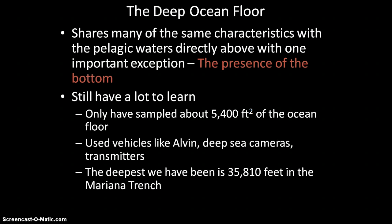The deep ocean floor shares all the same characteristics as the pelagic ecosystem above it — it's cold, dark, and there's a lot of pressure. However, there's one key difference between the abyssal plain and the pelagic regions: the presence of the bottom. In pelagic ecosystems, if food falls past you out of range, that food is gone forever. But on the deep sea floor, food falls to the bottom and stays there until something finds it, giving these animals more opportunity to find food.